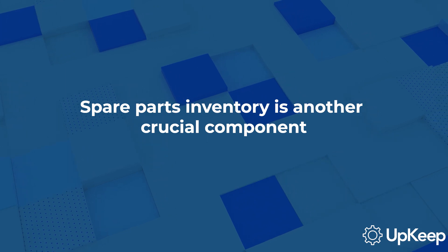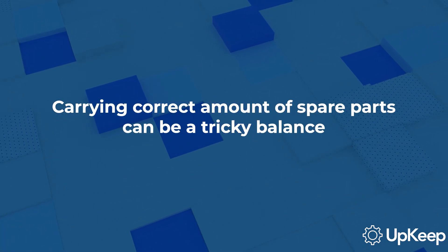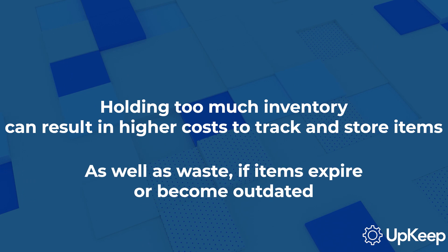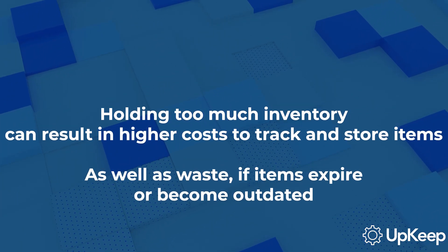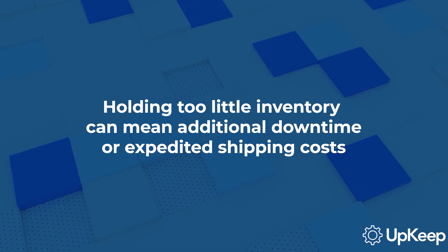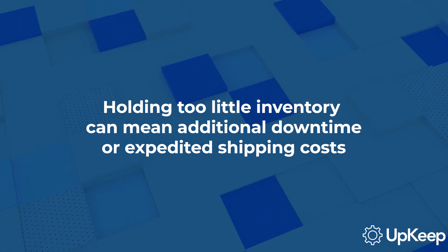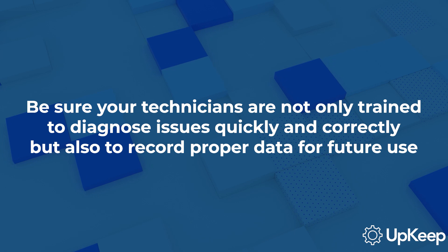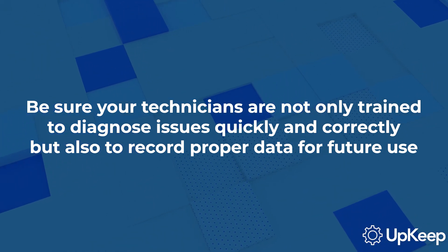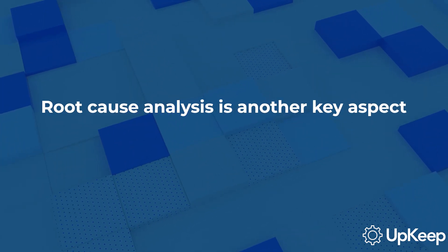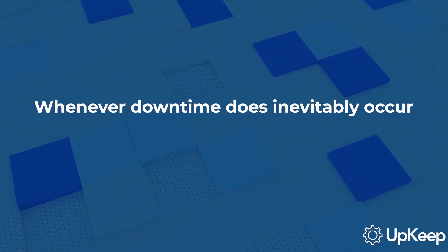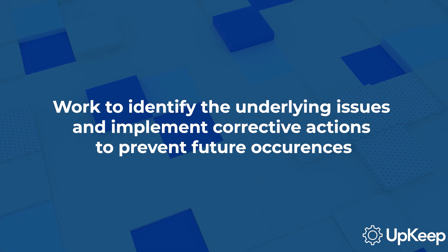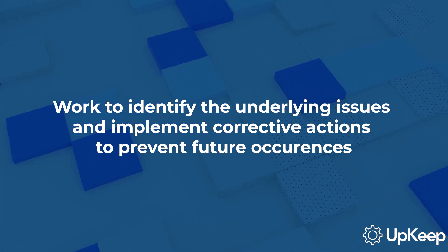Spare parts inventory is another crucial component. Carrying the correct amount of spare parts can be a tricky balance — holding too much inventory can result in higher costs to track and store items, as well as waste if items expire or become outdated. Holding too little inventory, on the other hand, can mean additional downtime or expedited shipping costs when an asset needs repair. Training and skills development is also vital: be sure your technicians are not only trained to diagnose issues quickly and correctly, but also to record data properly for future analysis. Root cause analysis is another key aspect — whenever downtime does inevitably occur, conduct a thorough root cause analysis, especially on your most critical assets, to identify underlying issues and implement corrective actions to prevent future occurrences.